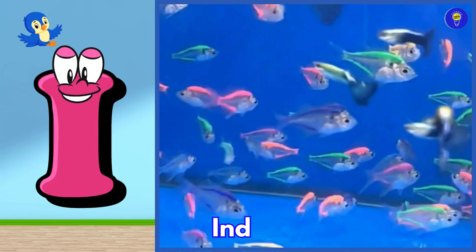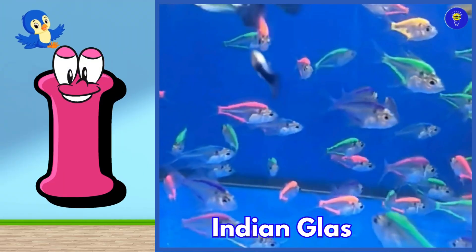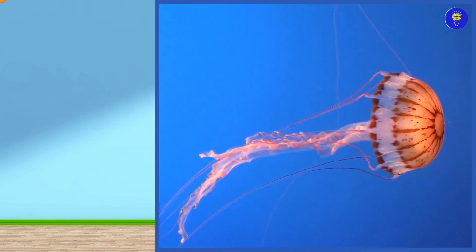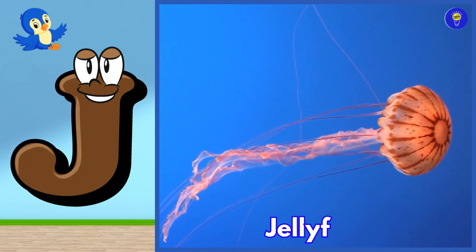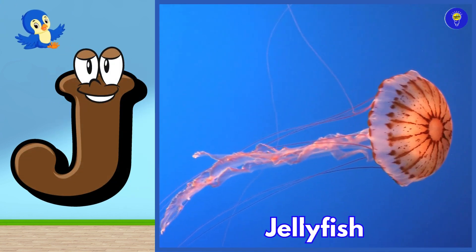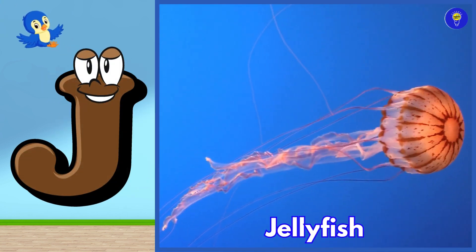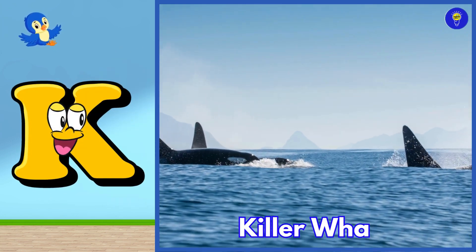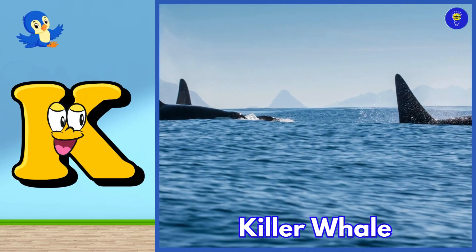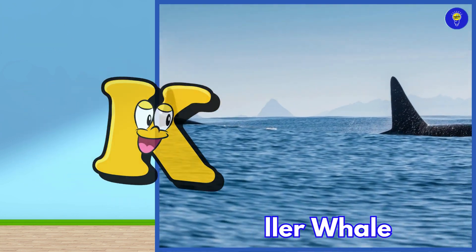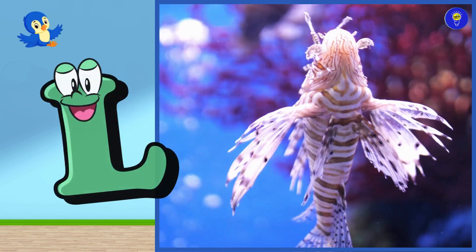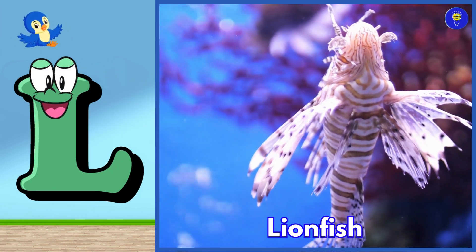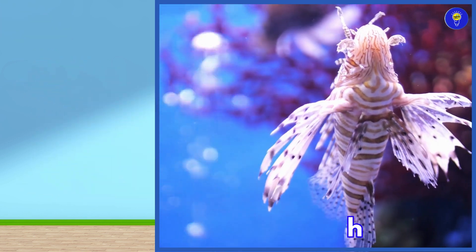I is for Indian glass fish. Eh, Indian glass fish. J is for jellyfish. Juh, jellyfish. K is for killer whale. Kuh, killer whale. L is for lionfish. Luh, lionfish.